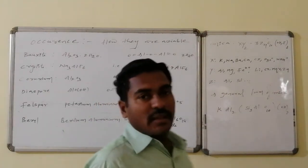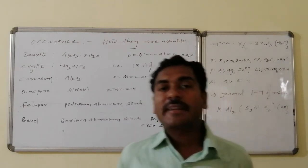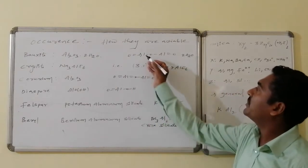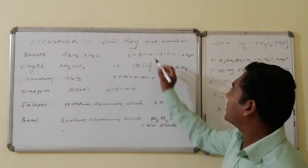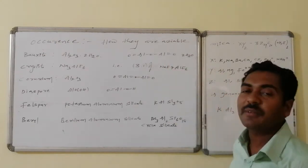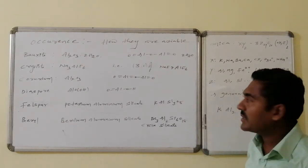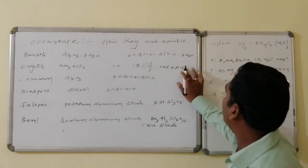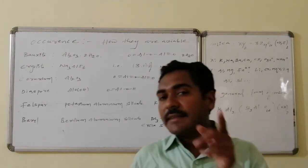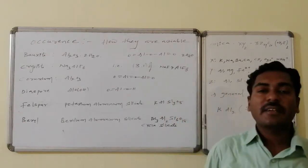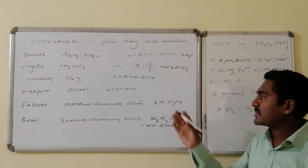Aluminium occurs mainly in the form of Bauxite, which is aluminium dihydrate: Al₂O₃·2H₂O. In its structure, aluminium has a valency of 3, connected with two types of oxygen — one with a double bond and one with a single bond — with a bridging oxygen connecting two aluminium atoms, followed by 2H₂O. Cryolite is Na₃AlF₆, which is a 3:1 ratio of sodium fluoride to aluminium fluoride AlF₃. Corundum is anhydrous bauxite, Al₂O₃, with no water molecules. Diaspore is AlOOH, formed by elimination of one water molecule from aluminium hydroxide.